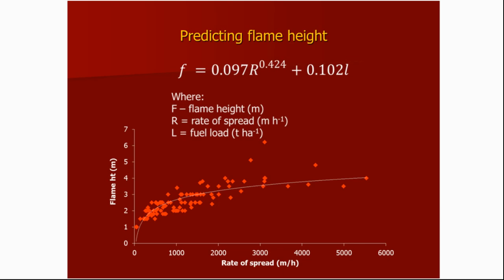I was a bit surprised that fuel load didn't turn up as a significant factor in predicting rate of spread — it was there, but really, really weak. In the interest of keeping the model fairly simple, we removed it because it wasn't contributing much to accuracy. I thought fuel load might be important because when watching spinifex fires in heavier fuels, the flames are taller, and you'd think that might facilitate more rapid spread — but statistically, it didn't add much. And clearly from that graph, under our experimental conditions, spinifex flame heights seem to level off at around three to four metres. They tend to get longer as the fires get faster, but we rarely got flame heights greater than about four to five metres.